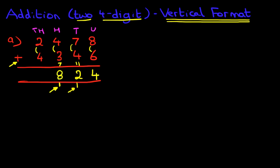And now we've got the thousands. We've got 2 plus 4. 2 plus 4 is 6. Our answer is 6,824.